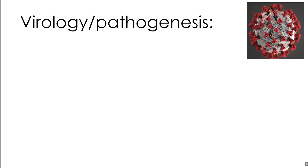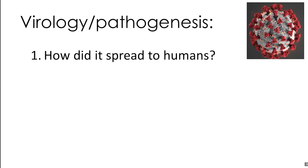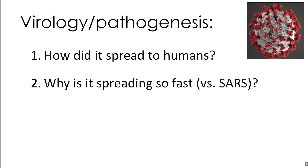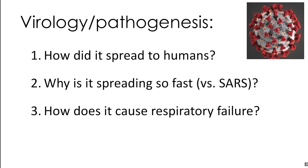There are three big questions that come up when we think about the virology and pathogenesis of this disease. One, how did it spread to humans? Two, why is it spreading so fast when we compare it to the original SARS virus? And three, how does it cause respiratory failure in a subset of patients? Unfortunately, we do not have a good understanding of any of these questions, but I'm going to share what is known.